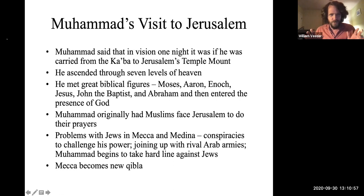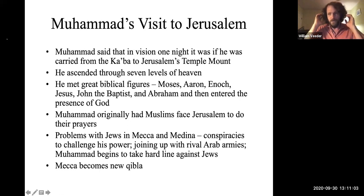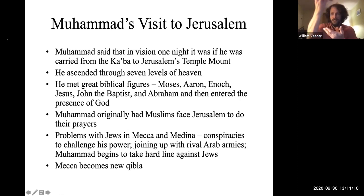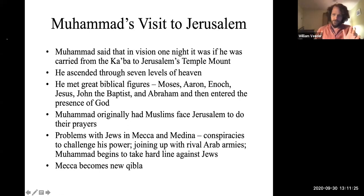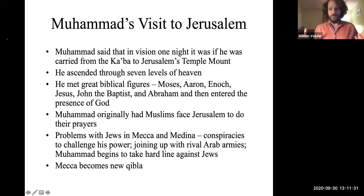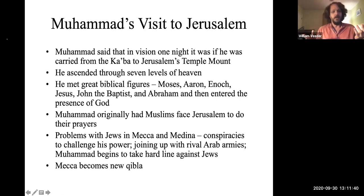One of the more controversial aspects in Islam is the Night Passage to Jerusalem. All religions add stories over time — the gospels were written 100 years after Jesus's death, and the Torah is written over more than a thousand years. Muhammad says that in a vision he was carried from the Kaaba to a location in Jerusalem that we call the Temple Mount. There he ascends through the seven layers of heaven. Through this story, Islam ties Muhammad into all the Jewish prophets and Jesus — he meets Moses, Aaron, Jesus, John the Baptist, Abraham — and enters the very presence of God.